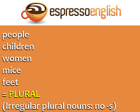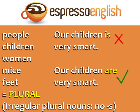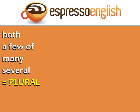People, children, women, mice, and feet are all plural. These are irregular plural nouns because they don't have an S, but they still take the plural form of the verb. For example, 'our children is very smart' is incorrect. The correct sentence is 'our children are very smart.'